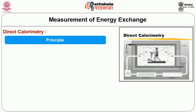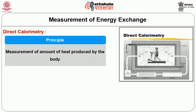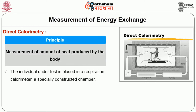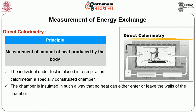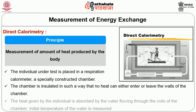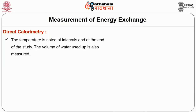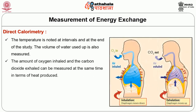Direct calorimetry: The principle involved is the measurement of the amount of heat produced by the body. The individual under test is placed in a respiration calorimeter, a specially constructed chamber insulated so that no heat can enter or leave the walls. The heat given off by the individual is absorbed by water flowing through coils of the chamber. Initial and interval temperatures of the water are measured, and the volume of water used up is also measured. The amount of oxygen inhaled and carbon dioxide exhaled can be measured simultaneously, allowing calculation of calories spent.